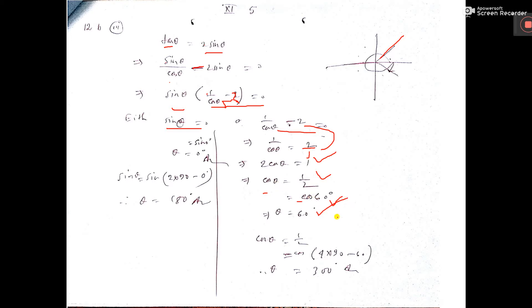Cosine is also positive in the fourth quadrant. Using the formula 4×90° - θ, we get 360° - 60° = 300°.